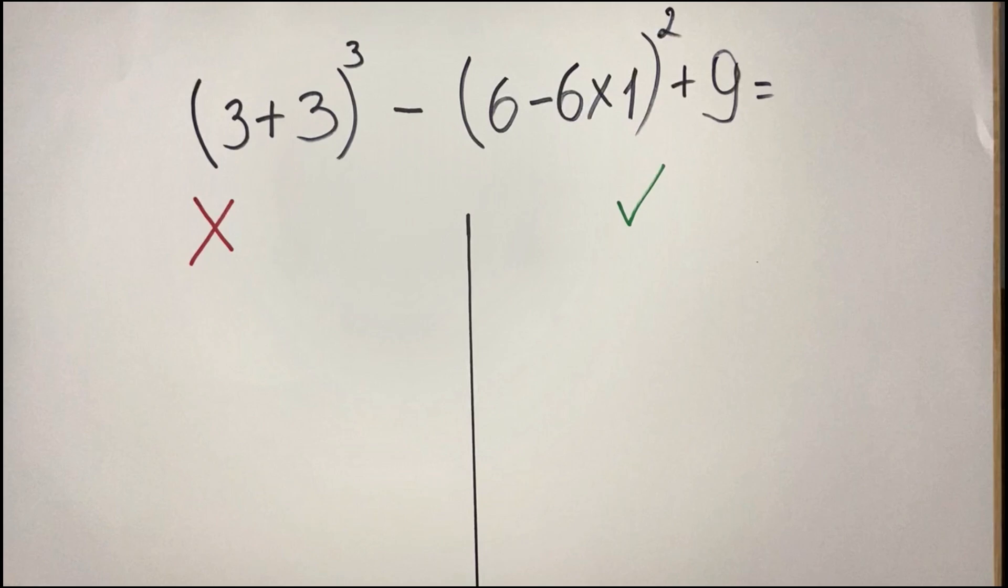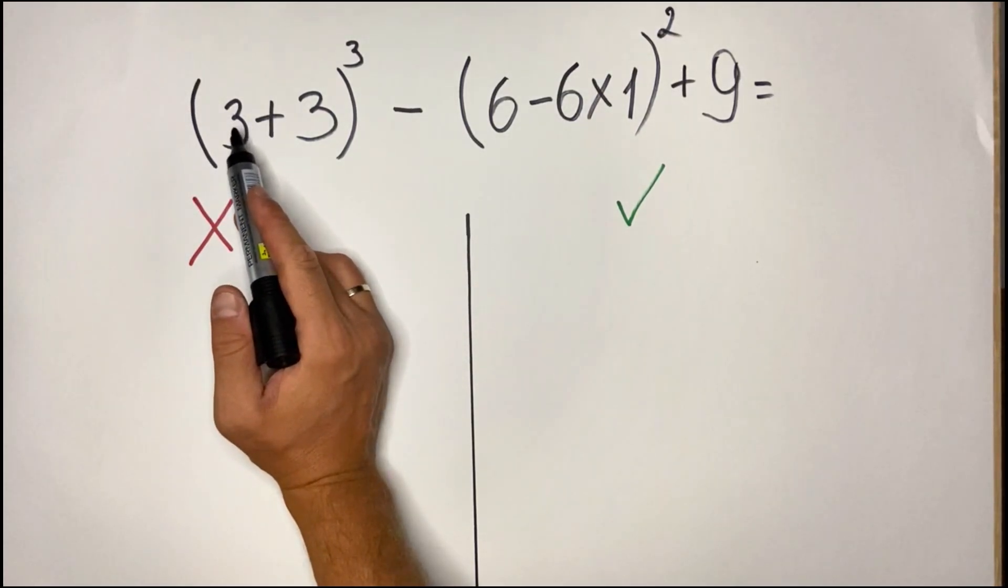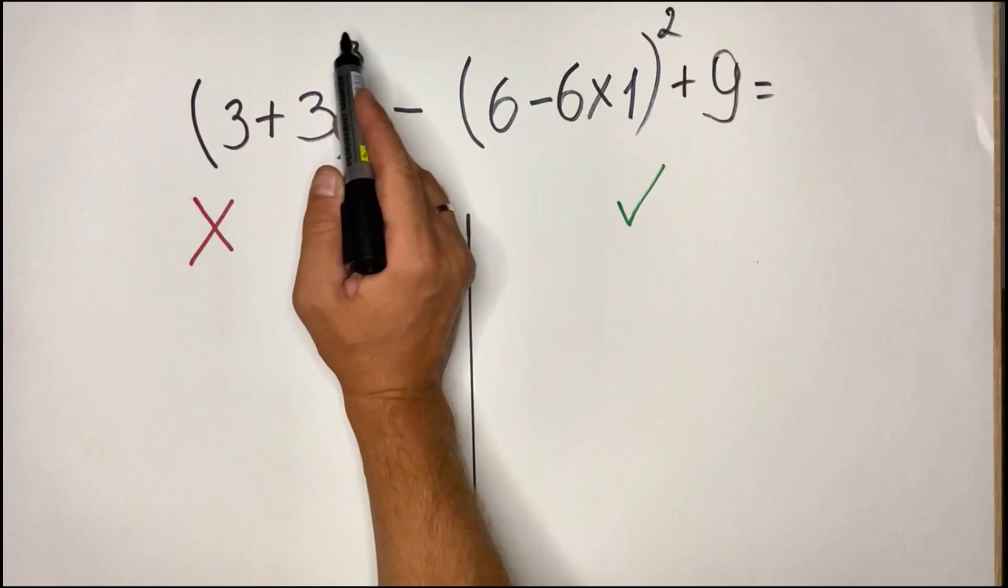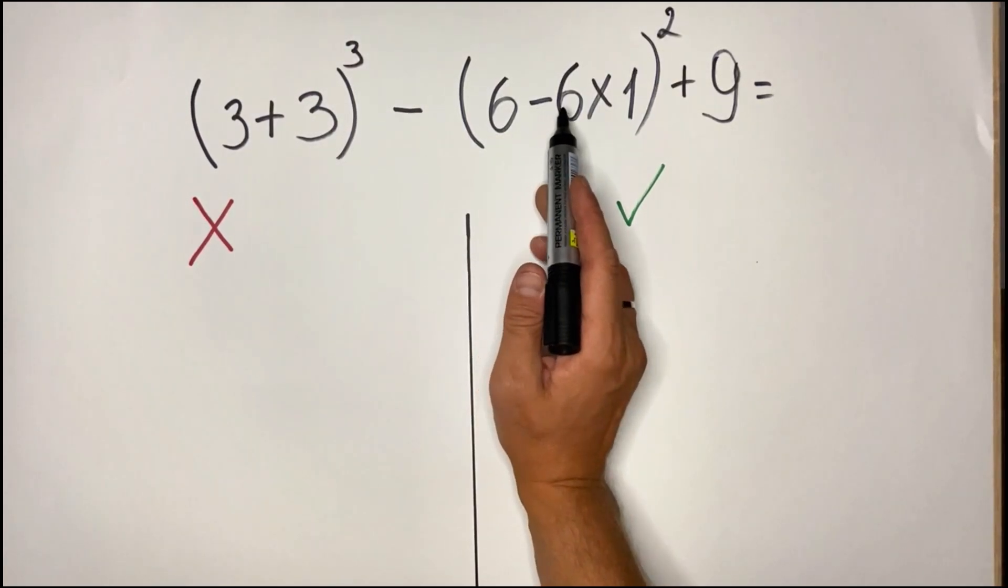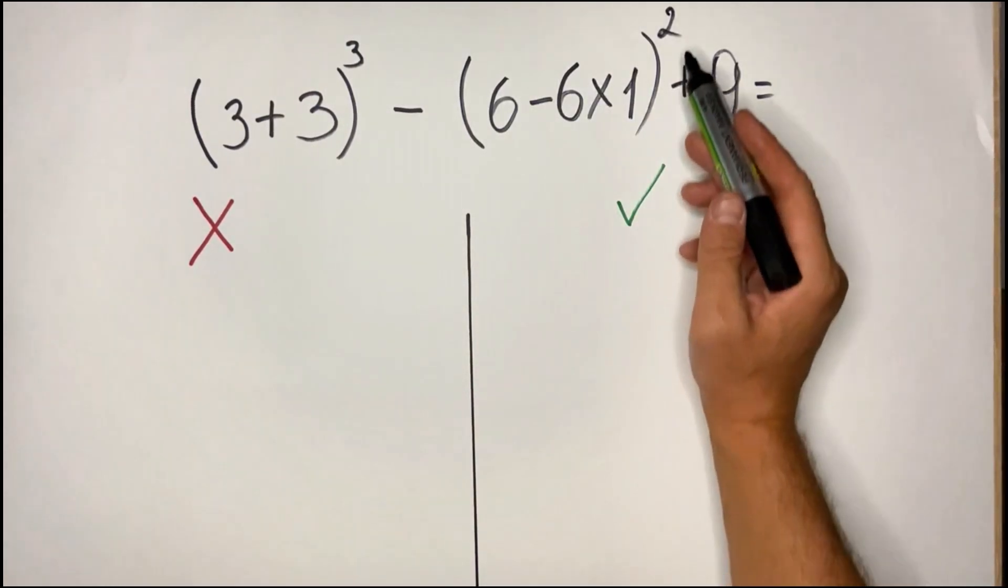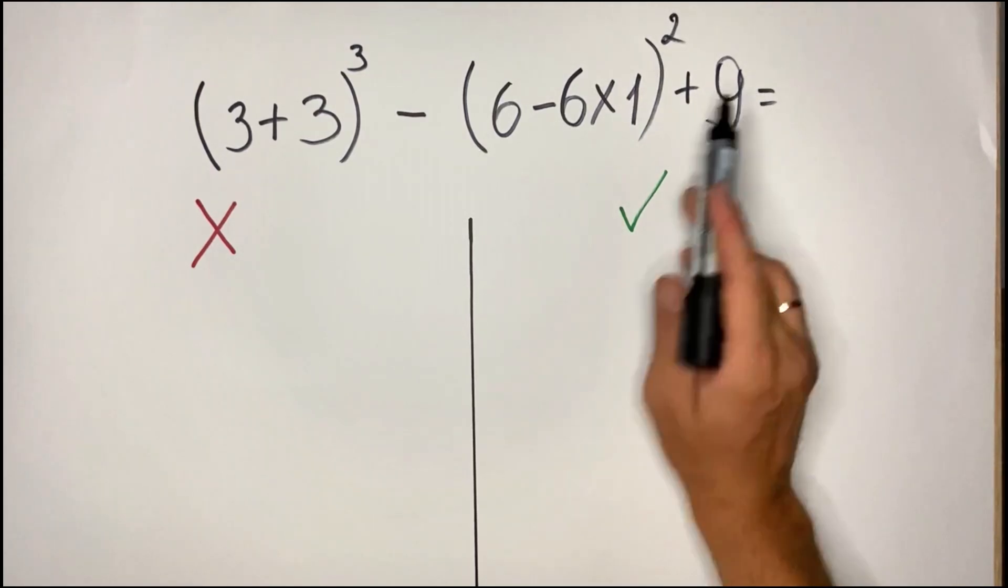So what we have here is the following equation: (3+3)³ - (6-6×1)² + 9. As usual, we can start with the most common mistake.